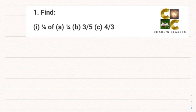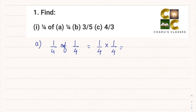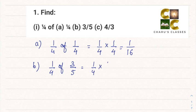Question number 1: find 1/4 of (a) 1/4. In maths, 'of' means multiplication, so we can write it as 1/4 multiplied by 1/4. Multiplying both numerators gives 1, and both denominators 4 into 4 gives 16, so the answer is 1/16.